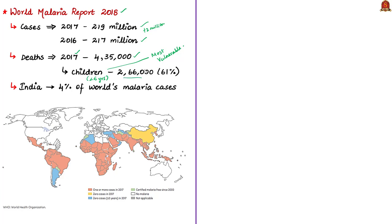According to this report, India accounts for 4% of the total malaria cases recorded worldwide. Malaria is more prevalent in the tropical areas of North and South America, Southeast Asia and the majority of Africa.